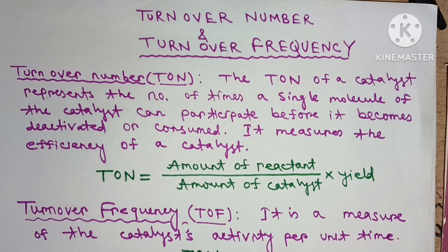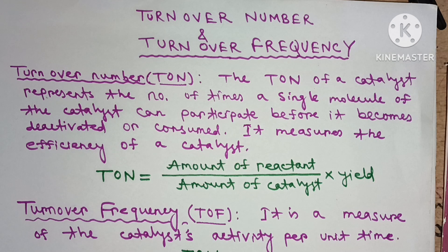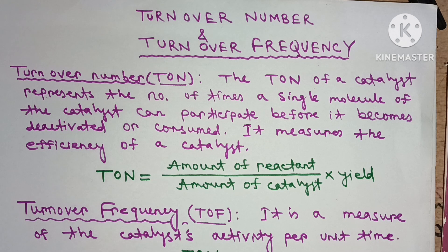Today we are going to discuss turnover number and turnover frequency of a catalyst. Catalysts work by repeatedly binding reactants and facilitating their transformation into products. The catalyst is not consumed during this process — we can recover it after the reaction is completed. The catalyst can then bind to another reactant and transform it into products, so we can say that catalysts work in a cycle.